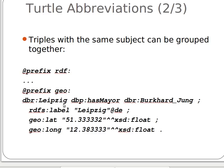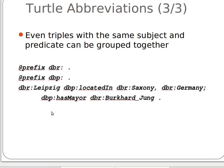Instead of repeating the 'has email' property, we use it once. Similarly, for the city of Leipzig with property 'located in', it can be both Saxony and Germany. Instead of saying 'located in Saxony; located in Germany', we can combine them.